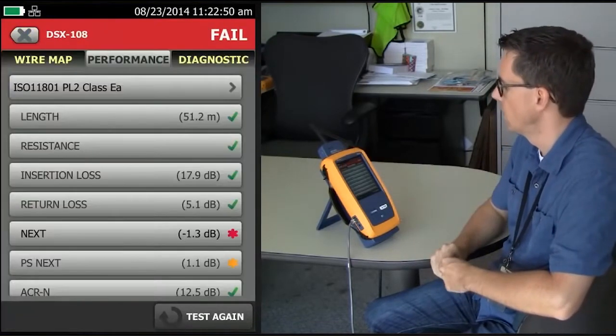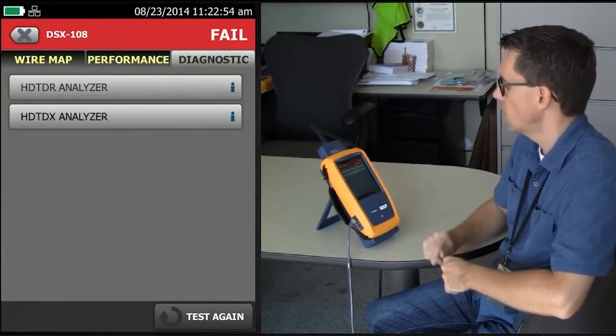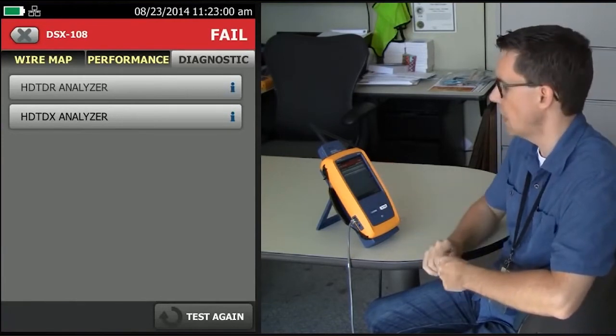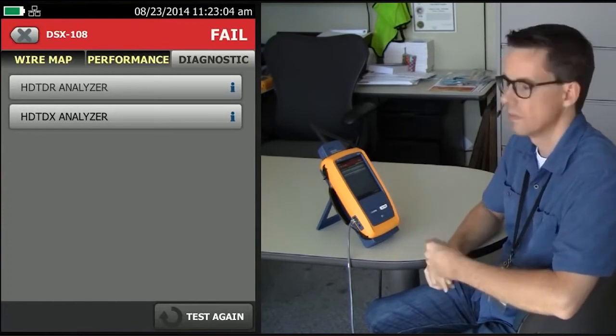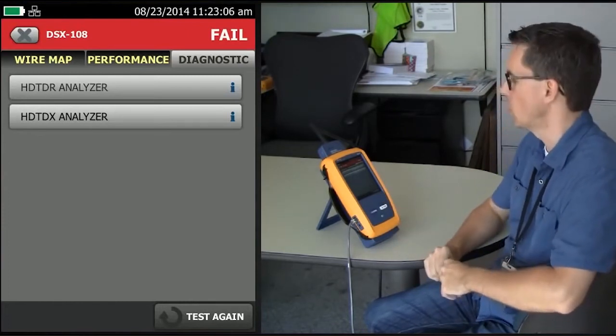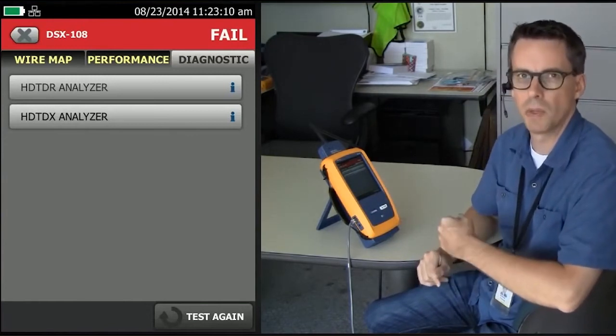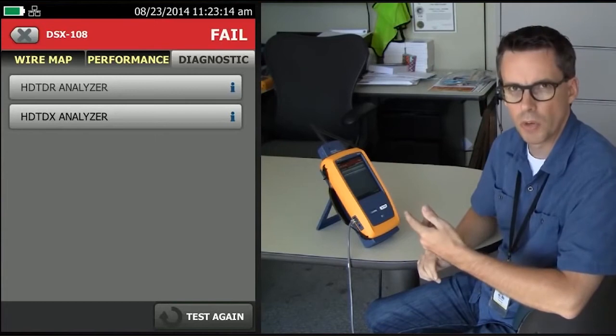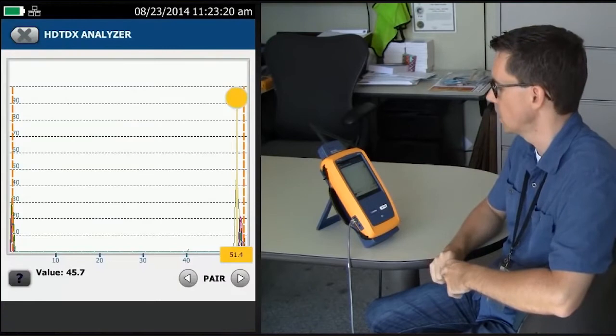Let's go back to the home screen. We have a diagnostic tag, and we have two options on there. We have HDTDR analyzer and HDTDX. The R in the HDTDR return loss, the HDTDX crosstalk. Of course, the purists out there will say TDR does not mean return loss. You're absolutely right. It means time domain reflectometer. But it's a good way to remember which one's for return loss and which one's for crosstalk. Let's tap the crosstalk diagnostics.